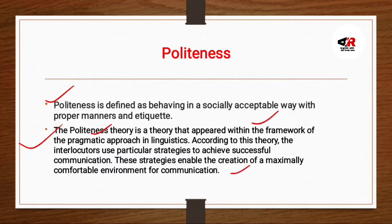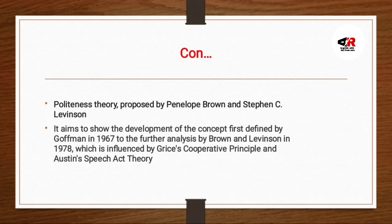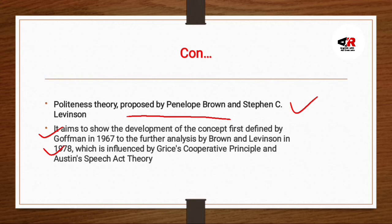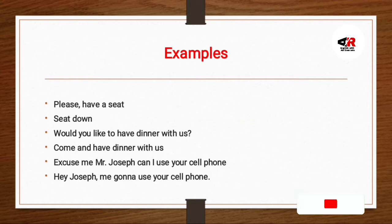The strategies enable the creation of a maximally comfortable environment for communication. Politeness theory was proposed by Penelope Brown and Stephen C. Levinson. It aims to show the development of the concept first defined by Goffman in 1967, with further analysis by Brown and Levinson in 1978, which was implemented using Grice's Cooperative Principle and Austin's Speech Act theory.